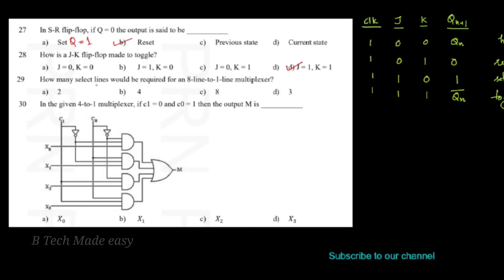Next question: how many select lines would be required for an 8-line to 1-line multiplexer? A multiplexer means many to one.